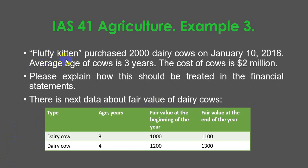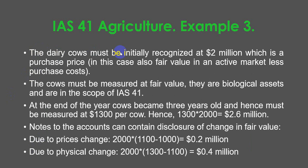The last example. Our entity Fluffy Kitten purchased 2,000 dairy cows on January 10, 2018. The average age of the cows is 3 years. The cost of the cows is $2 million. Please explain how this should be treated in the financial statements. There is data about the fair value of dairy cows: 3-year-old cows have a fair value of $1,000 at the beginning of the year and $1,100 at the end of the year. 4-year-old cows have a fair value of $1,200 at the beginning of the year and $1,300 at the end of the year.